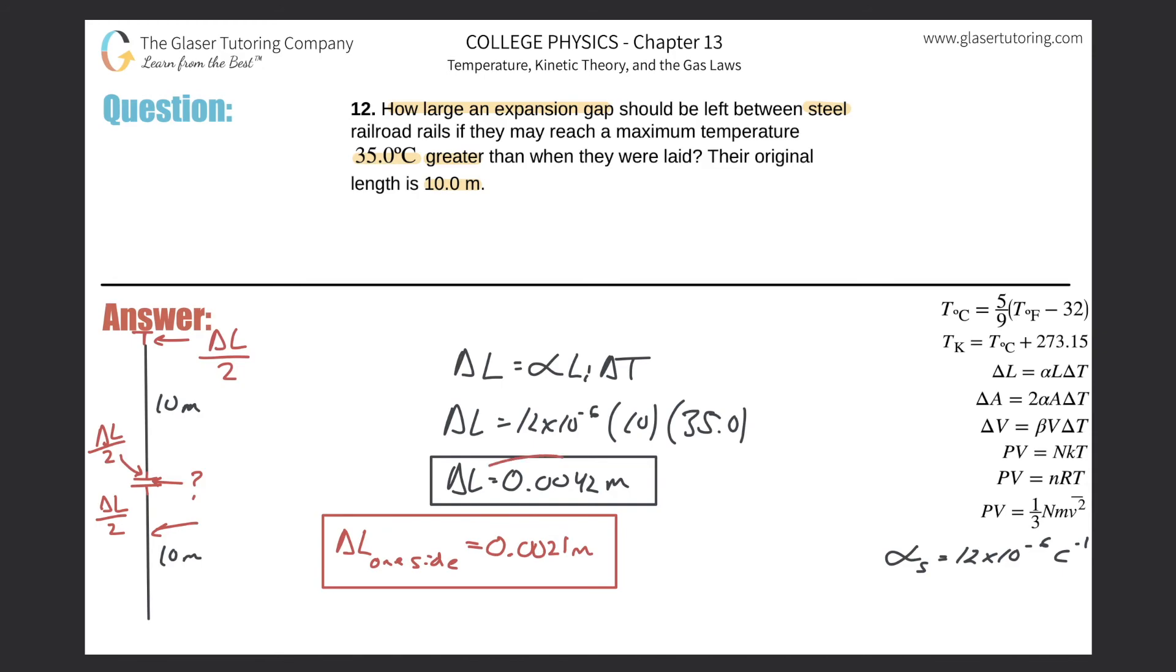But I didn't want to just say, well, here's the answer. So the total change in length, the gap that should be left between the two rails is this answer. But now hopefully we understand why this is the answer.